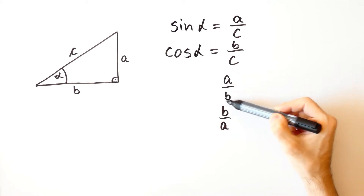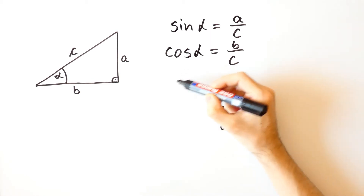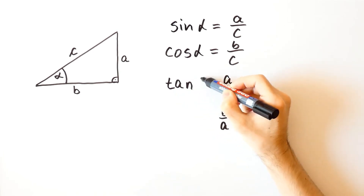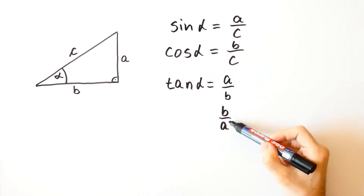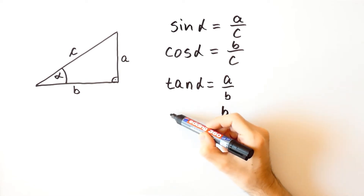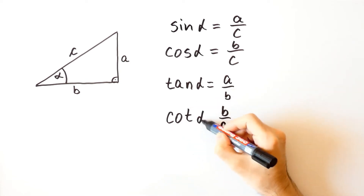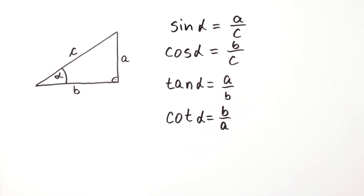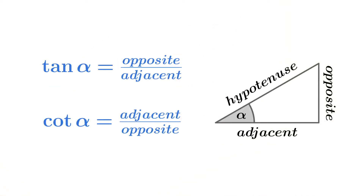The first one is called the tangent of alpha and the second one is called the cotangent of alpha. That is, the tangent of alpha is equal to the ratio of the opposite to the adjacent leg, while the cotangent of alpha is equal to the ratio of the adjacent to the opposite leg.